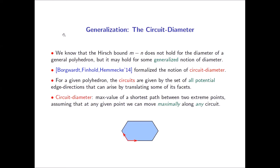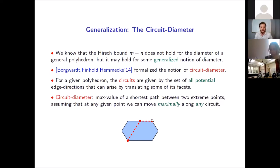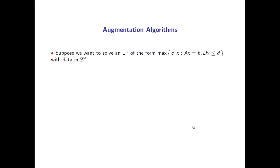The circuit diameter is the maximum value of a shortest path between any two extreme points, assuming at any point we can move along any circuit direction — including through the interior of the polyhedron — but once we pick a direction we move as far as possible until we hit the boundary. For example, on a polygon, at a vertex we could normally only move along the two incident edges, but in the circuit setting we have a third option: moving in a direction parallel to another edge direction. The circuit diameter gives a lower bound on the combinatorial diameter.